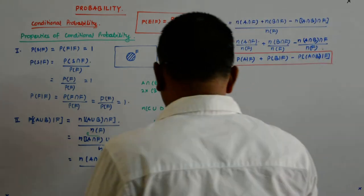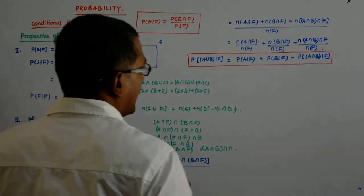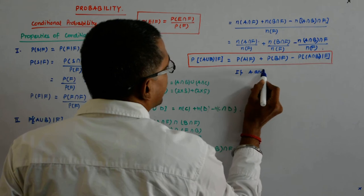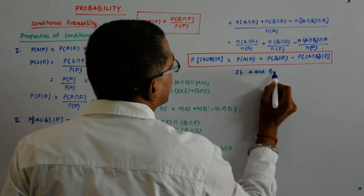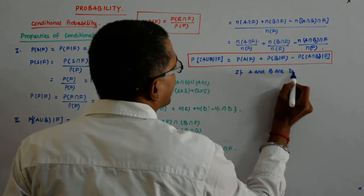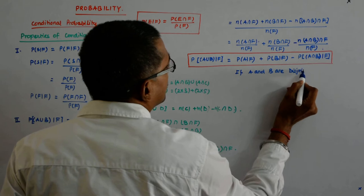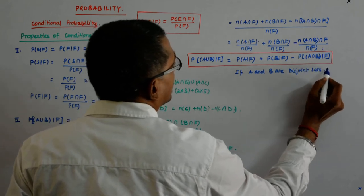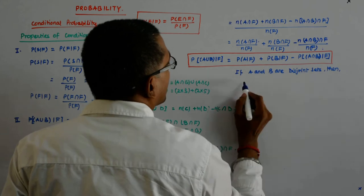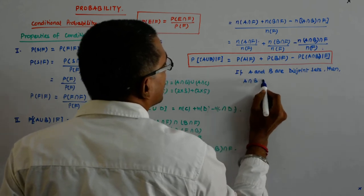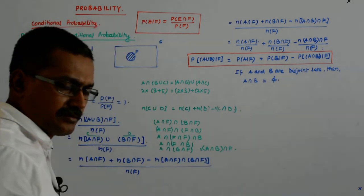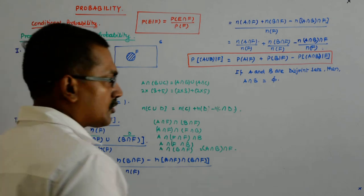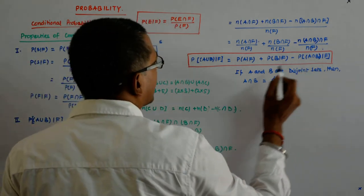Here you will find one thing: if A and B are disjoint sets — you understand what disjoint sets are? Nothing in common — then A intersection B is what? A null set. A intersection B is a null set.